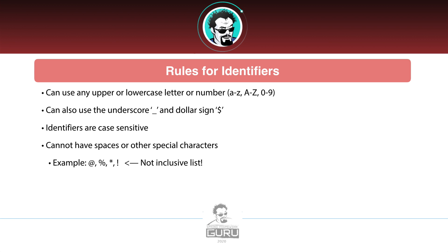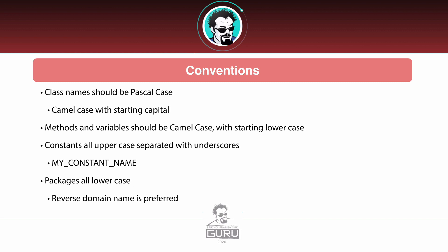Those are the general rules for identifiers, but there are several commonly accepted conventions. Class names should use PascalCase — basically camelCase with a starting capital, where you capitalize each key word in a string. Constants use all uppercase letters separated with underscores, for example MY_CONSTANT_NAME. And packages are all lowercase; reverse domain name is preferred.